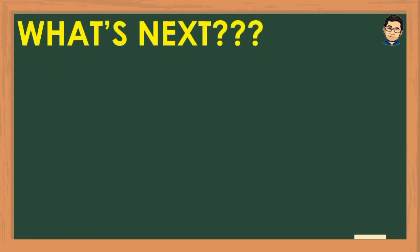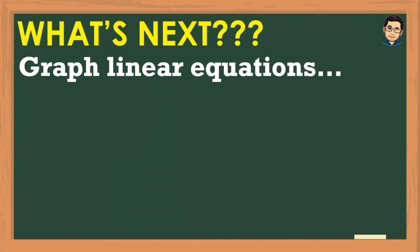After discussing how to write linear equations from standard form to slope-intercept form and vice versa, our next step will be to graph linear equations. Everything we've learned — the rectangular coordinate system, linear equations in two variables, slope, and transforming between standard and slope-intercept form — will all be applied in graphing linear equations. Thank you very much!